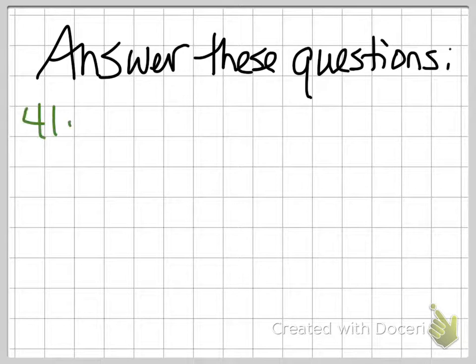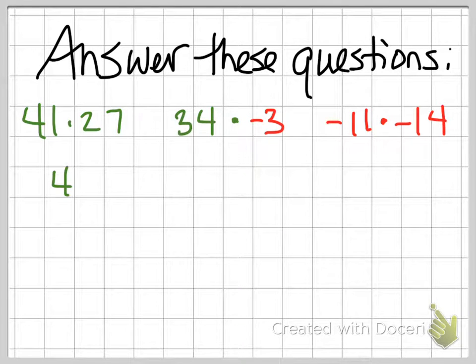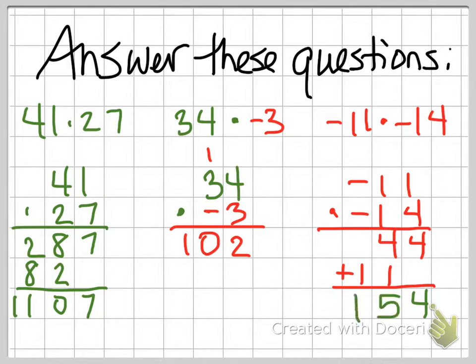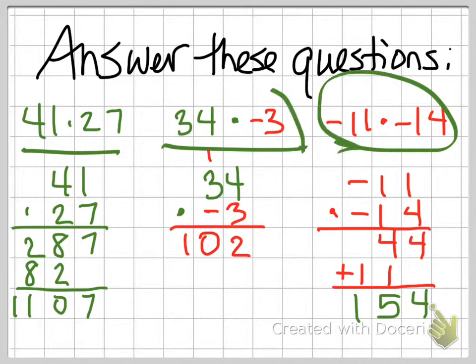Answer these questions, pause the video, and check your work. Okay, we have 41 times 27, 34 times negative 3, and negative 11 times negative 14. I use traditional multiplication. I can go over lattice with you in class if you'd like, but it would not change the rules that we use, where we got a positive answer, a negative answer, and another positive answer at the end.